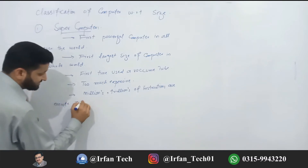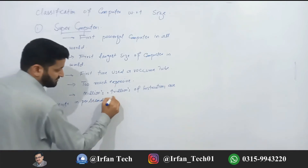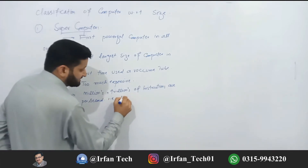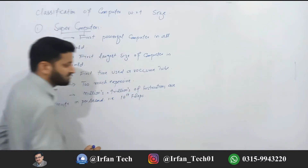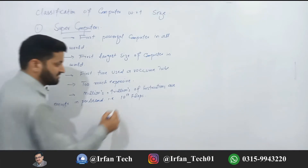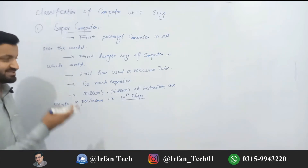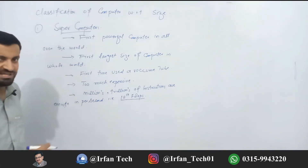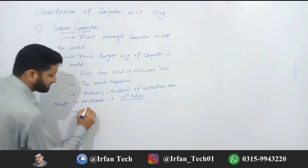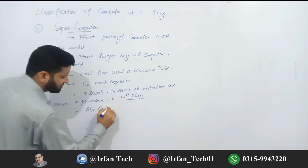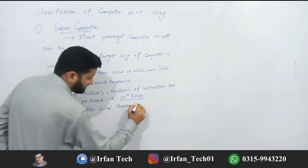It can execute trillions of instructions per second — 10 to the power 17 floating points per second. The supercomputer is known as a number cruncher.